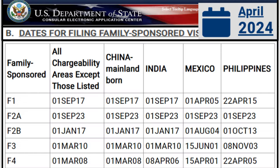This is the April 2024 visa bulletin. If you are in categories F1, F2A, F2B, F3, or F4, expect a long wait to get a welcome letter, to get documentally qualified, and to get an interview letter. One thing to mention about the April visa bulletin: there is only one minor change for Philippines — it went up by one year, so it's now 2005 instead of 2004. The other categories have the same priority date.